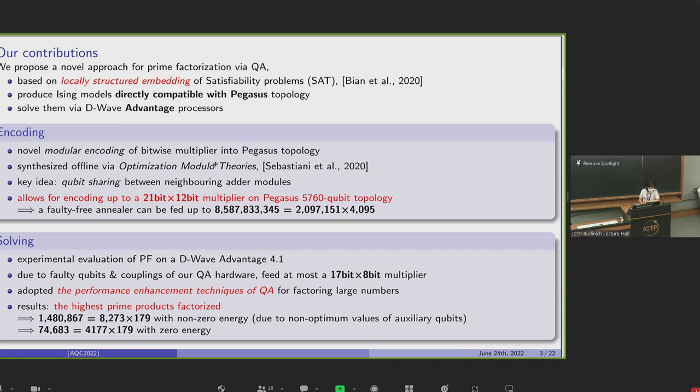In this talk, we will present modular encoding of bitwise multiplier into Pegasus, which is synthesized offline via optimization modulo theories. We will show that this modular encoding can be used in combination with qubit sharing to encode up to 21-bit times 12-bit multipliers on Pegasus topology, ideally enabling Advantage system to factor 33-bit numbers, and most of this large number, 8 billion.